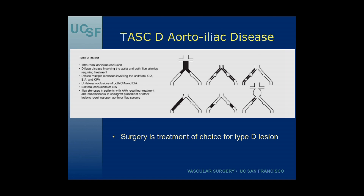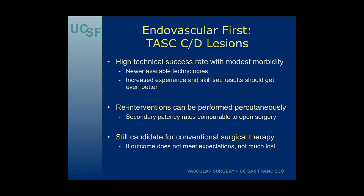For the more severe TASC-D lesions, the consensus is that open surgery is the treatment of choice for a type D lesion. So why are we talking about endovascular treatment of TASC-C and TASC-D lesions if the recommendations are to approach these with an open surgical approach?